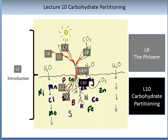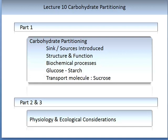Please ensure that you have watched all the other lectures before continuing with this lecture. There is a lot of material to cover, so this lecture is separated into three parts. In the first part, we will concentrate on carbohydrate partitioning — you will learn about source and sinks, structure and function and its relationship to source and sinks, some simple biochemical processes, important carbohydrates such as glucose and starch, and the key transport molecule sucrose. In parts 2 and 3, we will combine our understanding of photosynthesis light and non-light requiring reactions with carbohydrate partitioning to understand the physiology and ecological considerations.